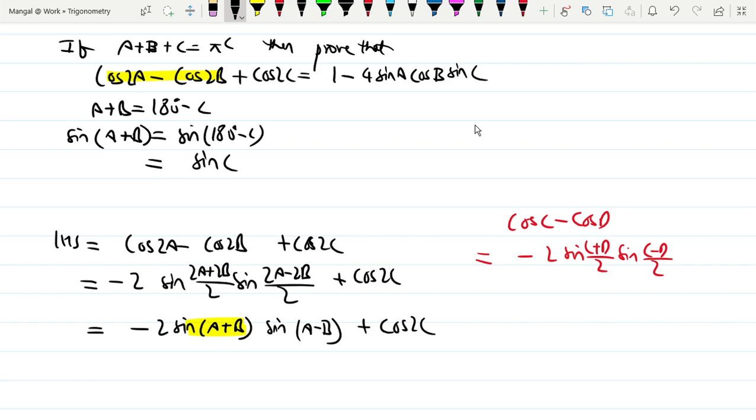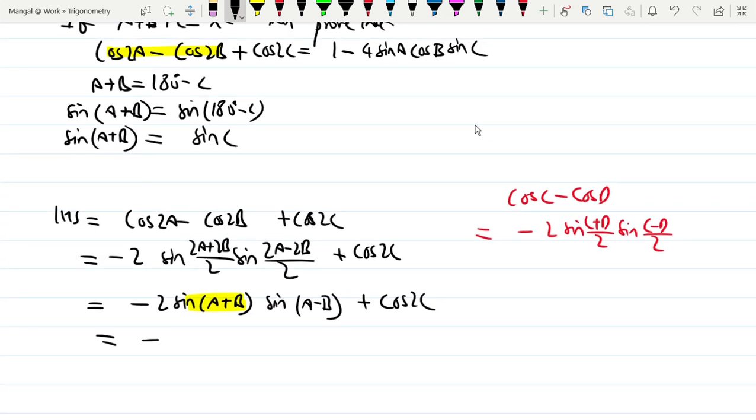So this will be positive. This sin(a+b) is equal to sin(c), giving us -2sin(c)sin(a-b) + cos(2c). Now let's use the formula for cos(2a).